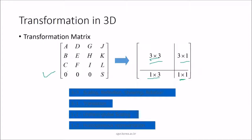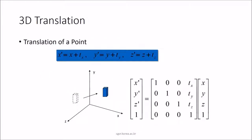For 3D translation, the parameters tx, ty, and tz represent translation along x, y, and z respectively. The new coordinate x-dash is formed by adding tx to x; similarly for ty and tz. When you add tx, ty, tz to each coordinate, the new translated position is obtained. Multiplying the translation matrix with the homogeneous coordinates x, y, z gives the translated matrix.